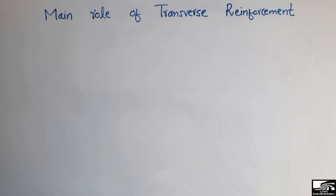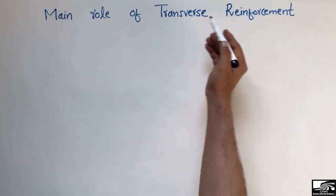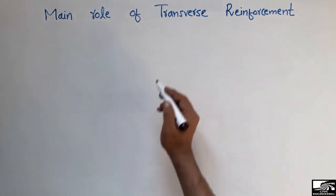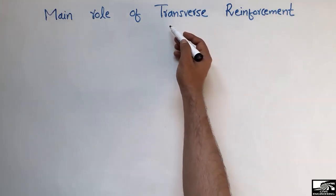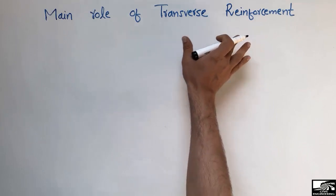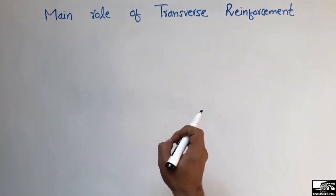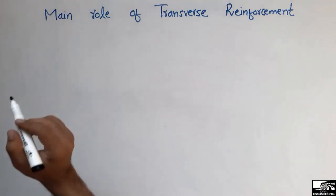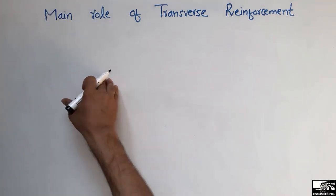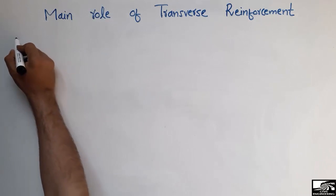Welcome back to the Seven Engineering YouTube channel. Today our lecture is about the main role of transverse reinforcement — why we provide it, sometimes also called lateral reinforcement. Transverse reinforcement plays an important role in the design of columns and beams. There are three main purposes for providing it.